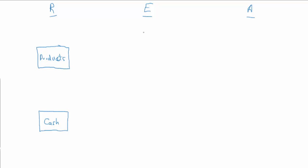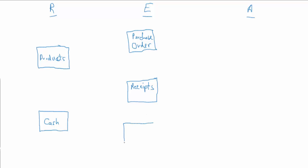We've got a number of events. We would typically have a purchase order. Then we're going to receive the goods. And then eventually we will make a payment for those goods, and we'll call that a cash disbursement.